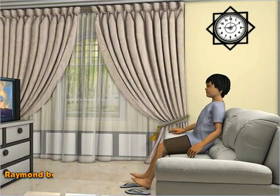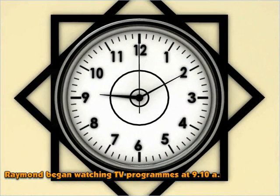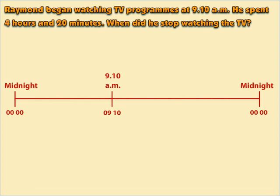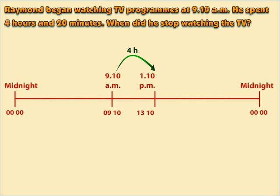Later that week, Raymond was taking a break from work and began watching TV programs at 9:10 a.m. He spent 4 hours and 20 minutes. When did he stop watching TV? We shall first draw a timeline. The 9:10 a.m. mark is when Raymond started his break. We need to add 4 hours and 20 minutes to the time. Splitting the time to be added — if we add the first 4 hours, we reach the 1310 mark, then adding 20 minutes from this point, we reach the 1330 mark, or 1:30 p.m. on the 12-hour clock.